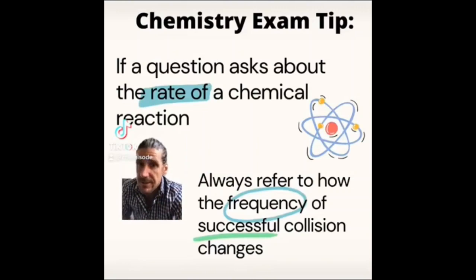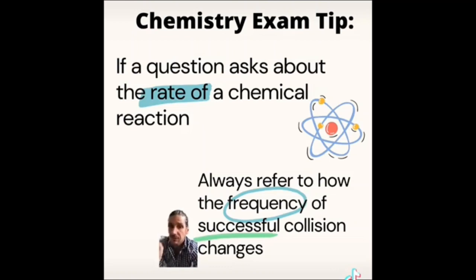Chemistry exam tip number 13. And this one is to do with the rates of chemical reactions. For many of you, this is a no-brainer. But fundamental to the rate of a chemical reaction is how frequently molecules collide. So whenever you're talking about a rate of a chemical reaction, ensure that you include the terms frequency of successful collisions and talk about how this might increase or decrease. You really should have four stock responses for rates of chemical reactions, which are basically implanted in your brain. So whenever you see a question about rates of reaction, you simply rewrite the same response.